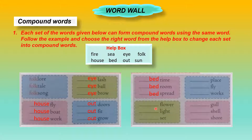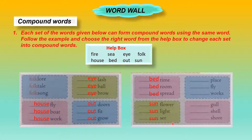Now next is flower, light, and set. We can take the word 'sun' — sunflower, sunlight, and sunset.